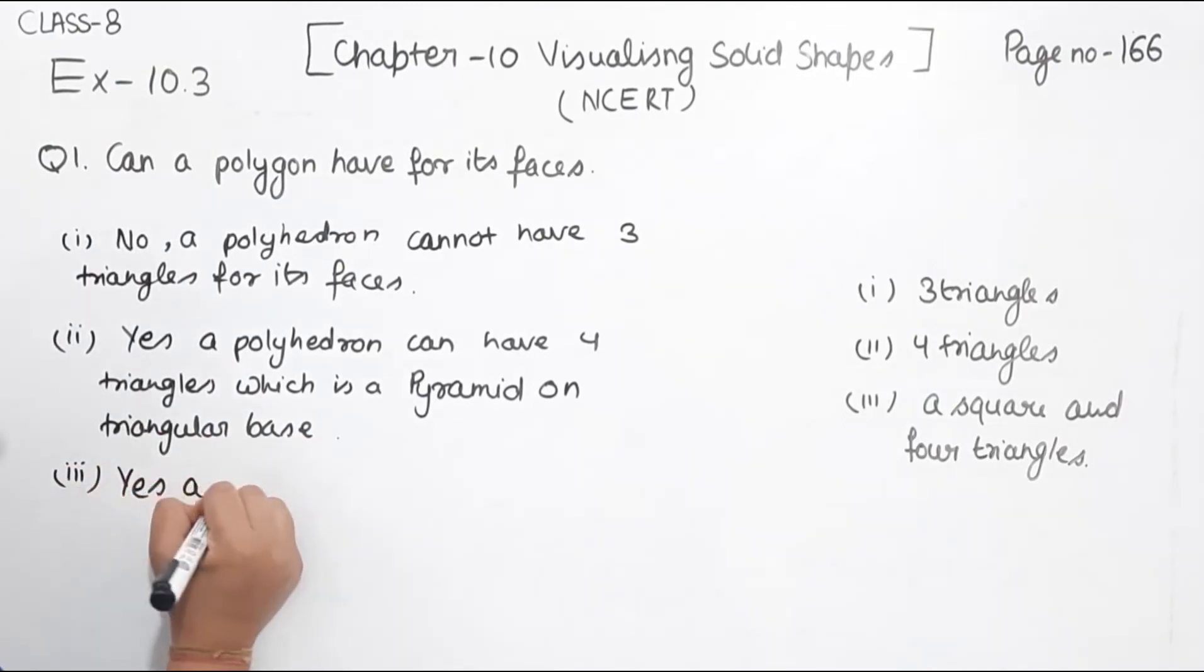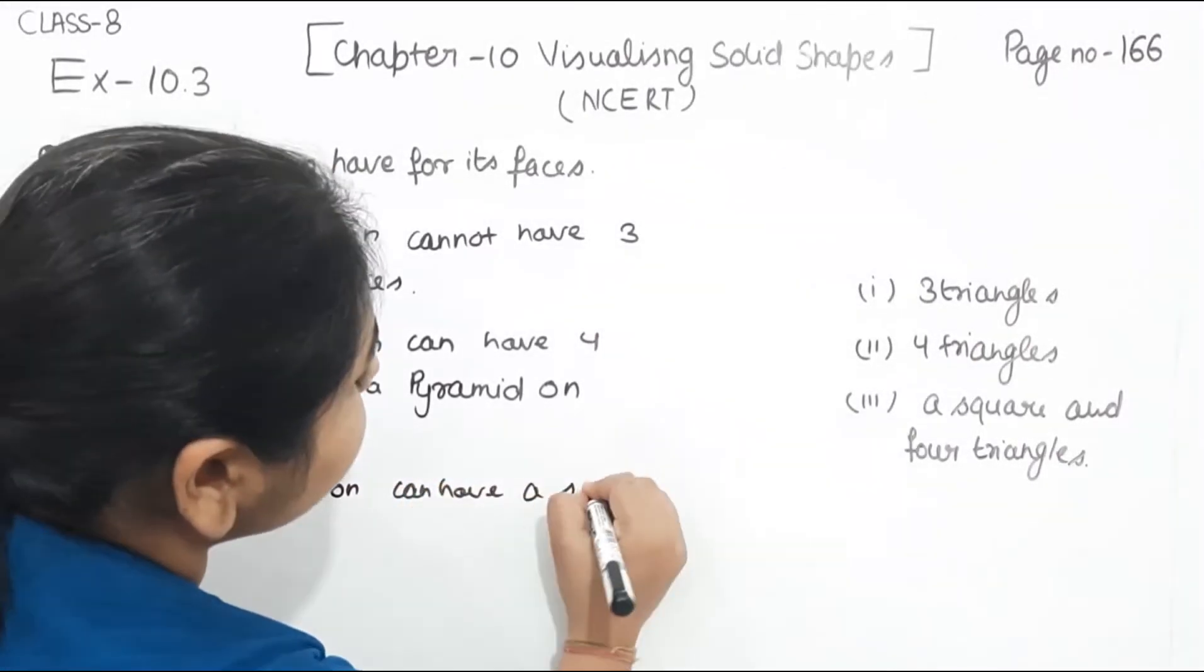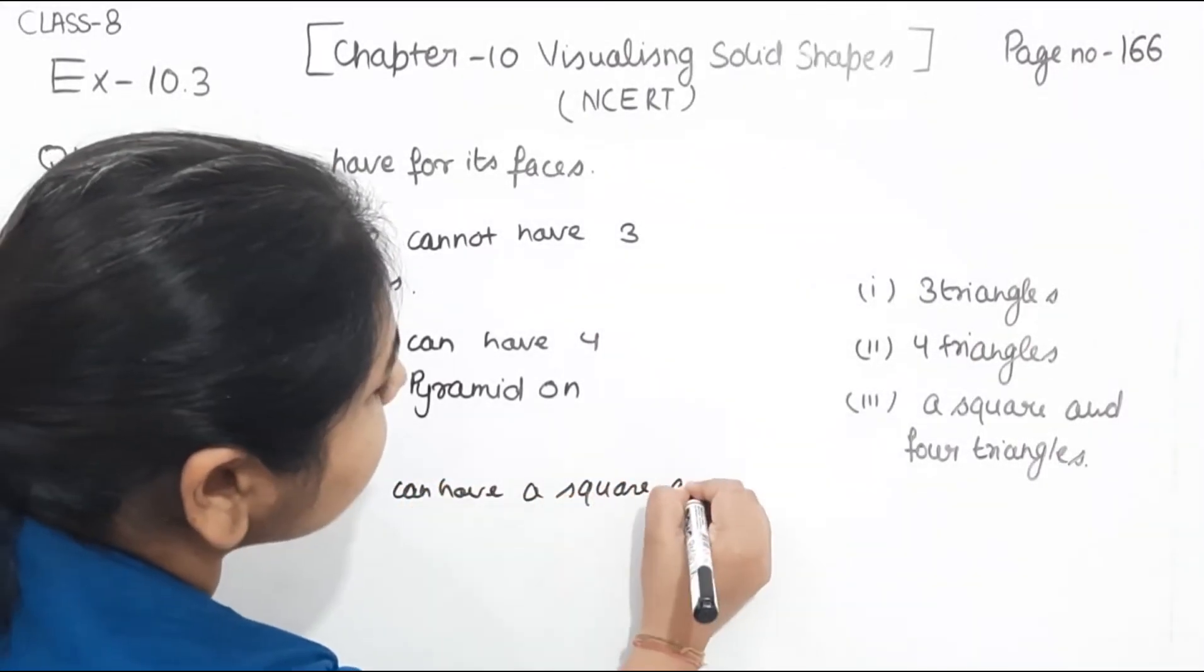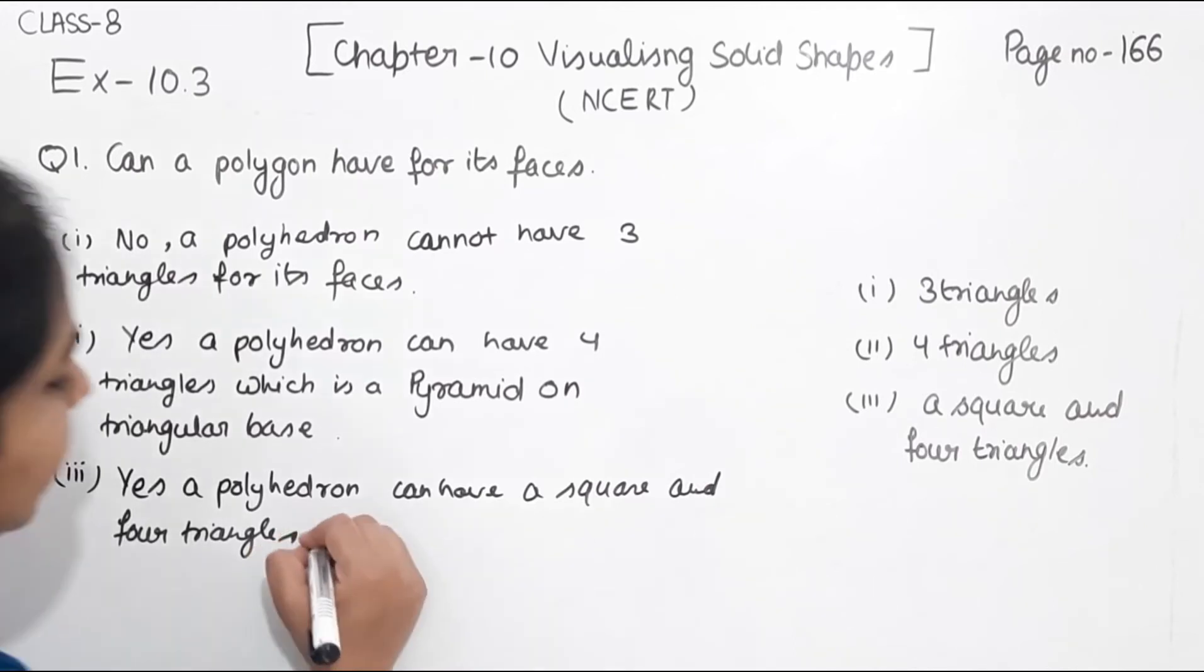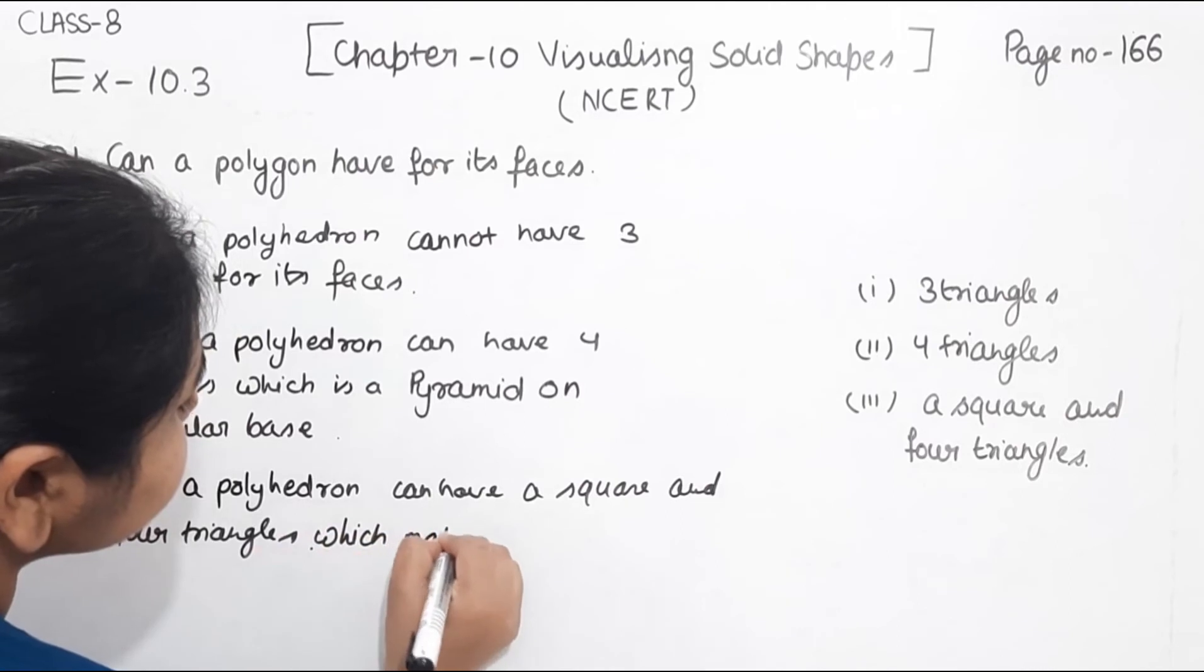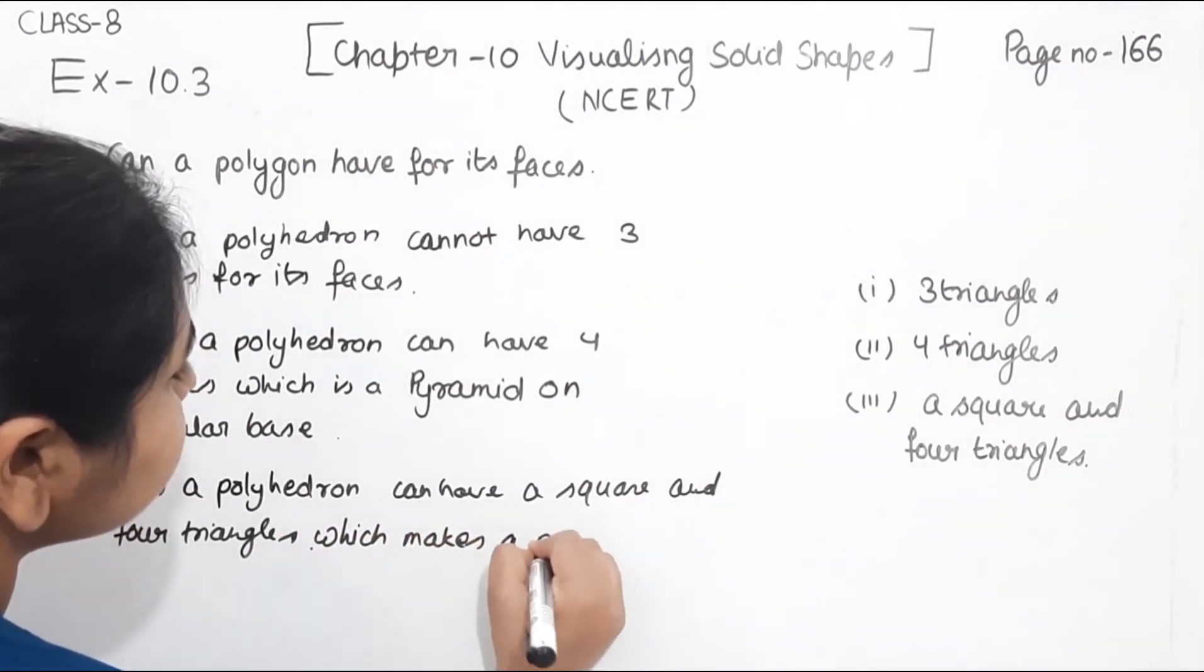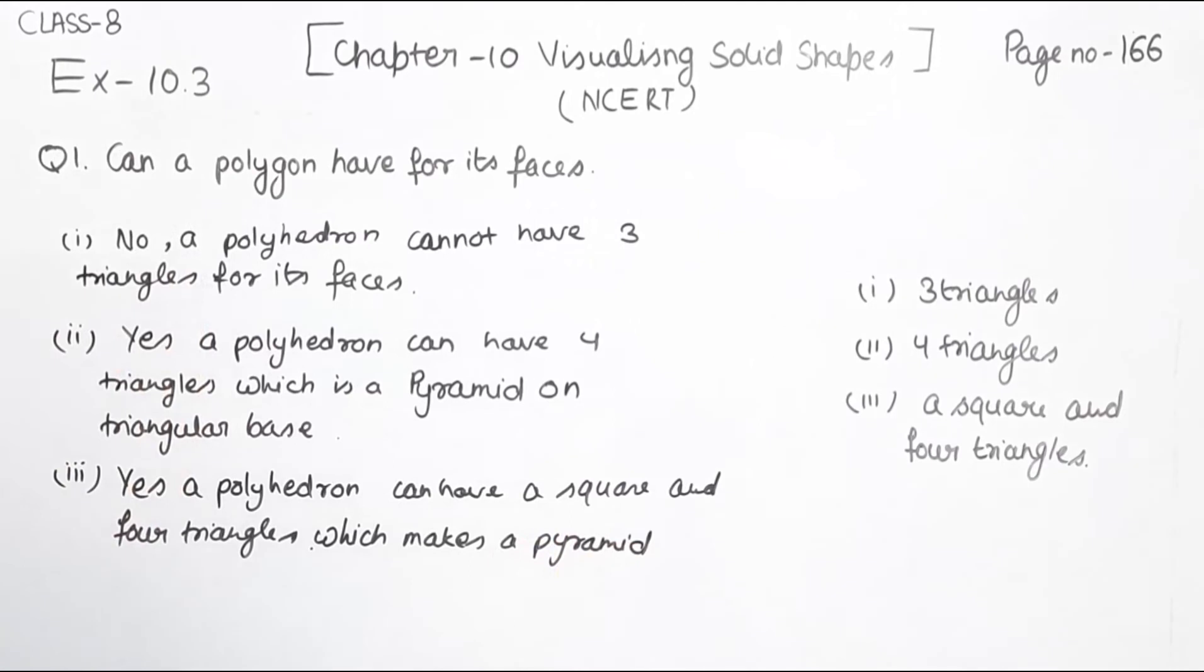a polyhedron can have a square and four triangles, which makes a pyramid on square base.